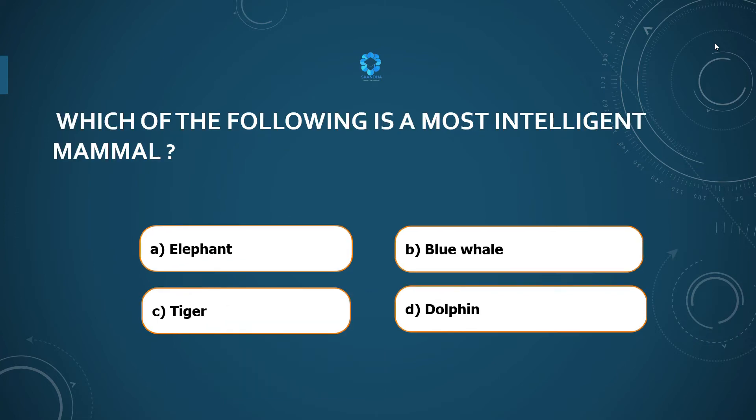Which of the following is the most intelligent mammal? Elephant, blue whale, tiger, or dolphin?